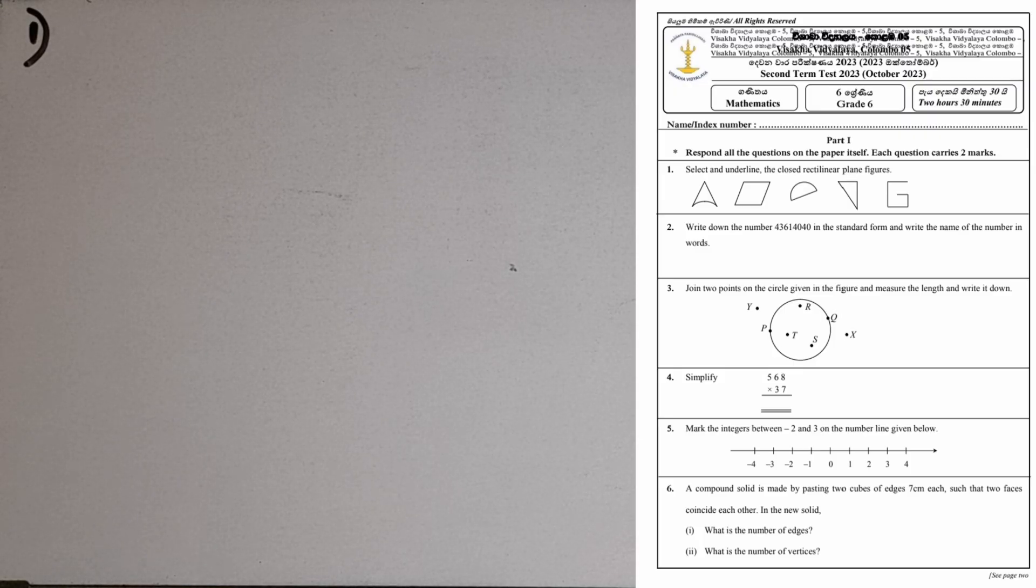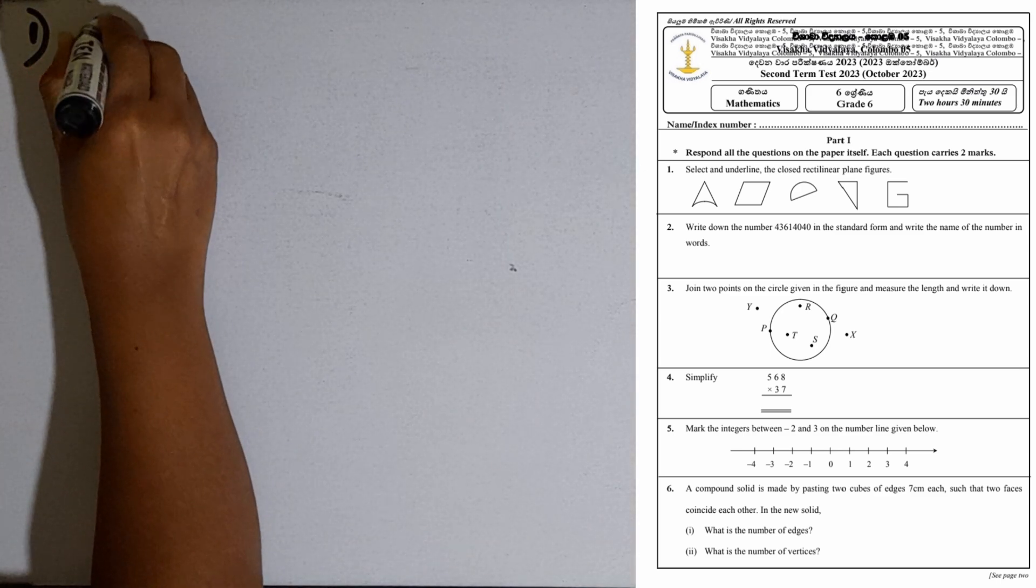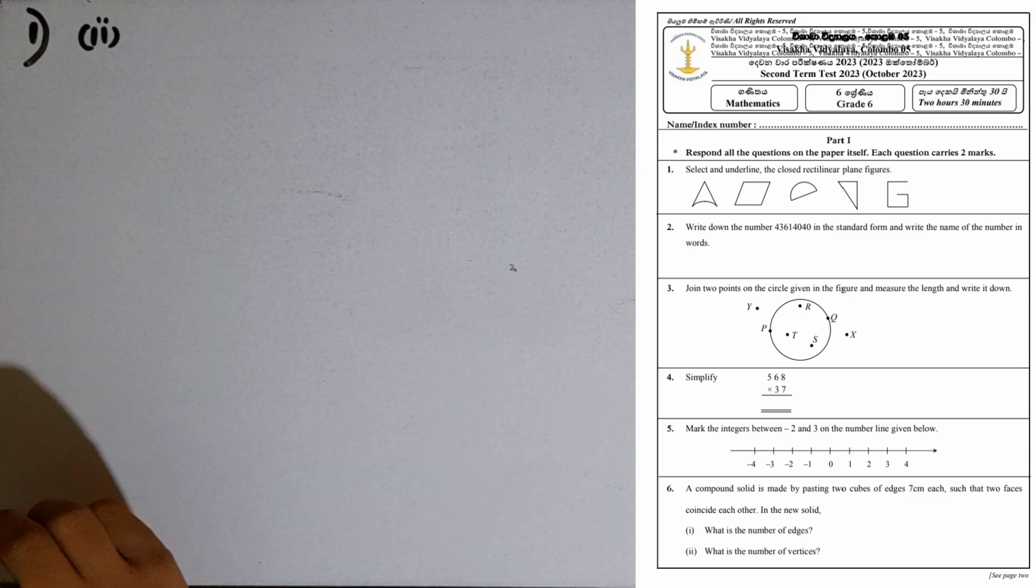First question: Select and underline the closed rectilinear plane figures. What are closed rectilinear plane figures? Rectilinear means they have to be bounded only by straight line segments. The first figure we can't take, it has a curved line segment. The second one is correct, bounded by four straight line segments.